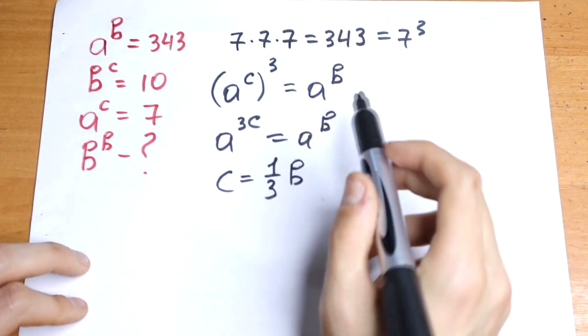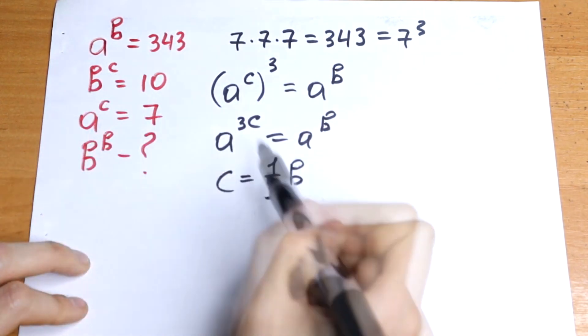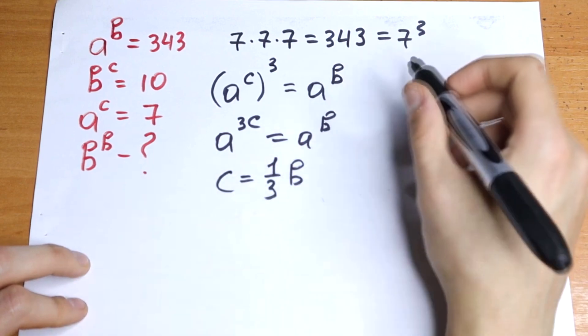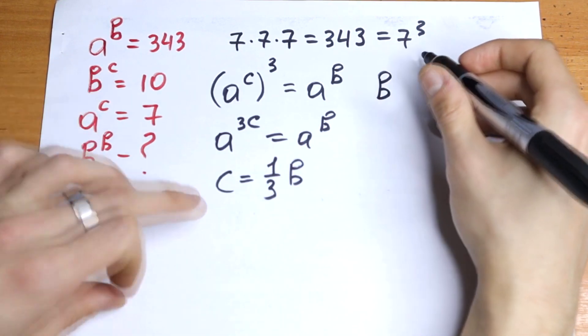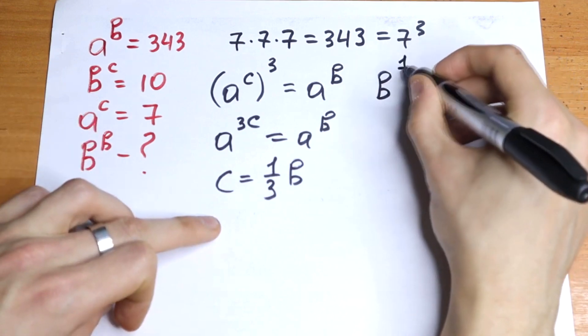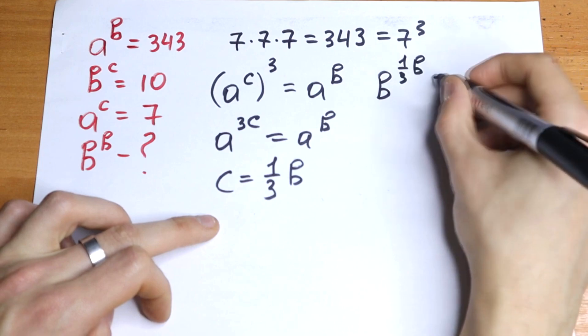Real good case because we can put this c right here and we can for sure calculate our b to the power b. How can I do this? b to the power c, which is b to the power 1 over 3 times b, equals 10.